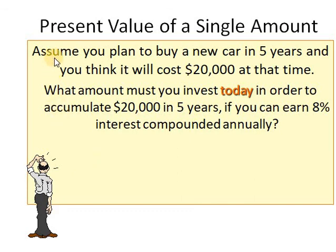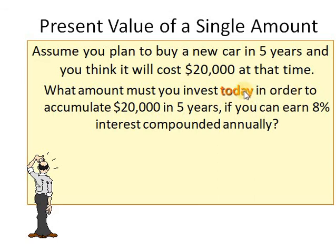Let's see this exercise. Assume you plan to buy a new car in five years — not now, but after five years — and it will cost $20,000 at that time. That is the future value. What amount must you invest today — the present value — in order to accumulate $20,000 in five years if you can earn 8% interest compounded annually? You invest a certain amount today, earn 8%, and it accumulates to $20,000.